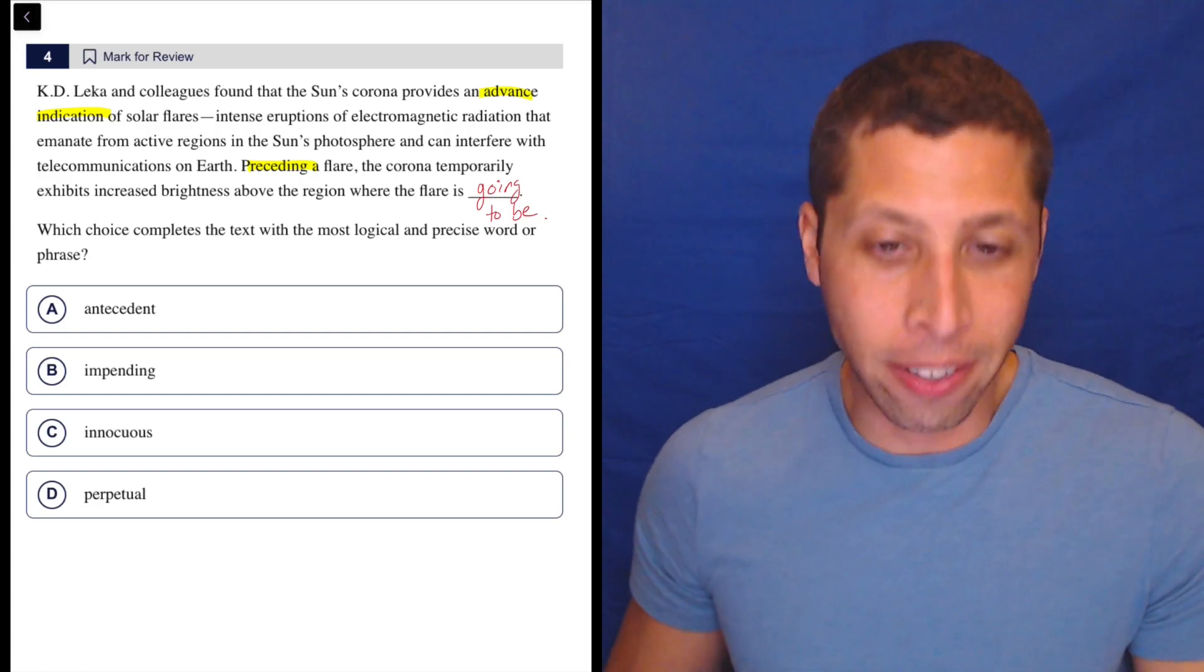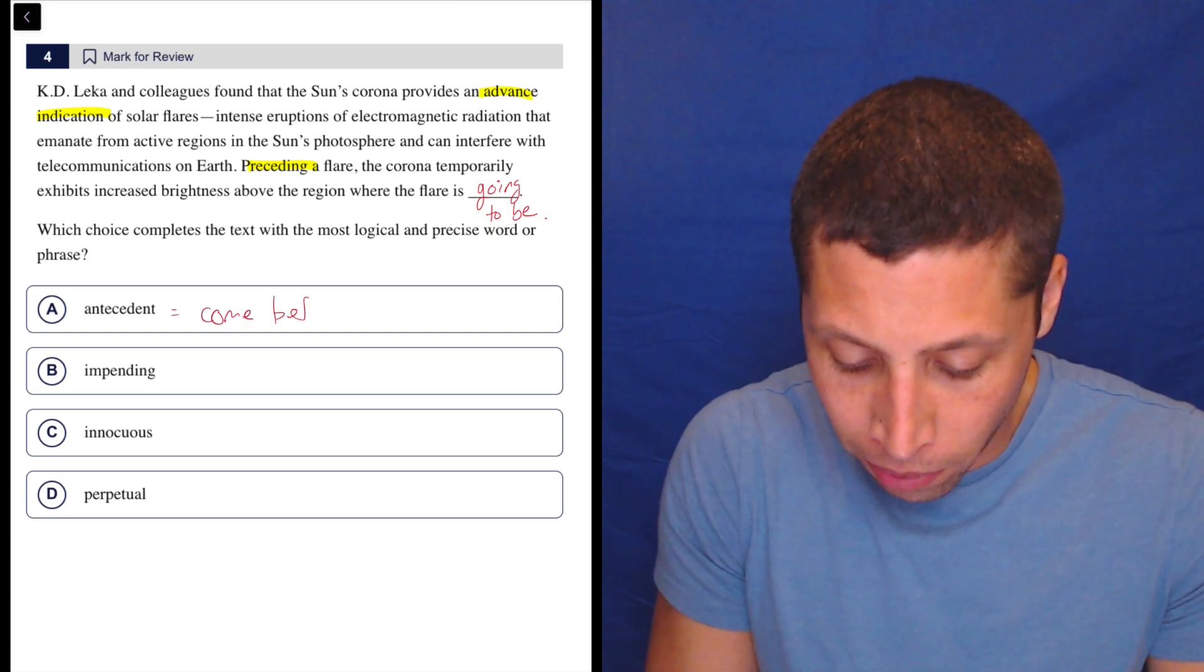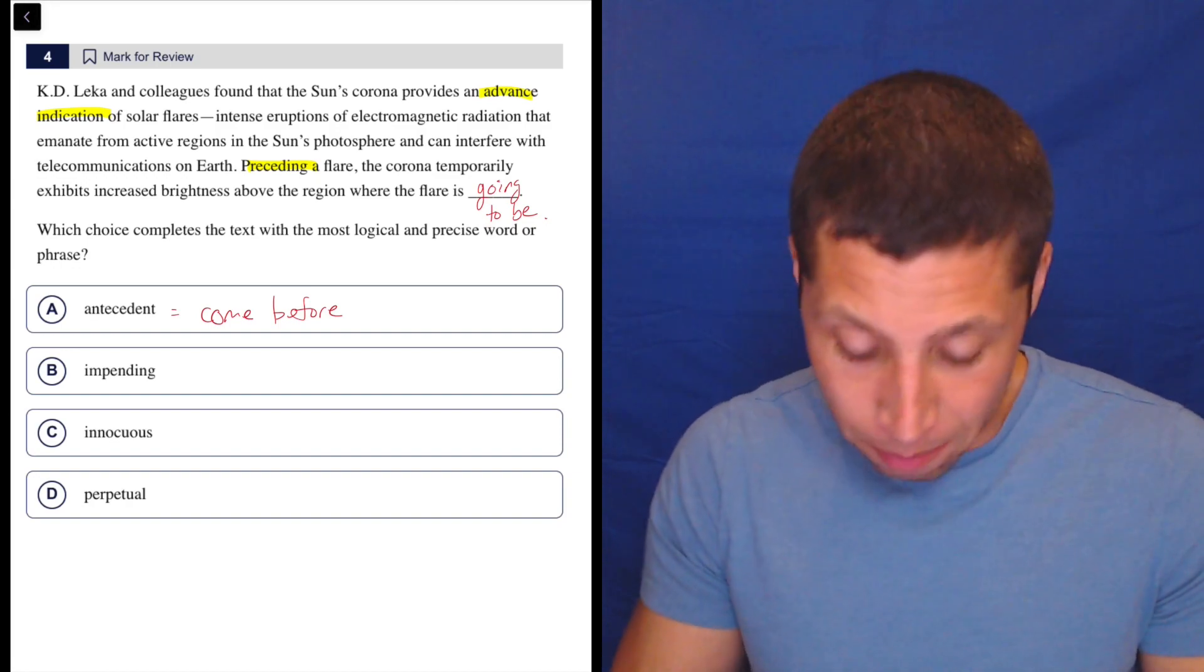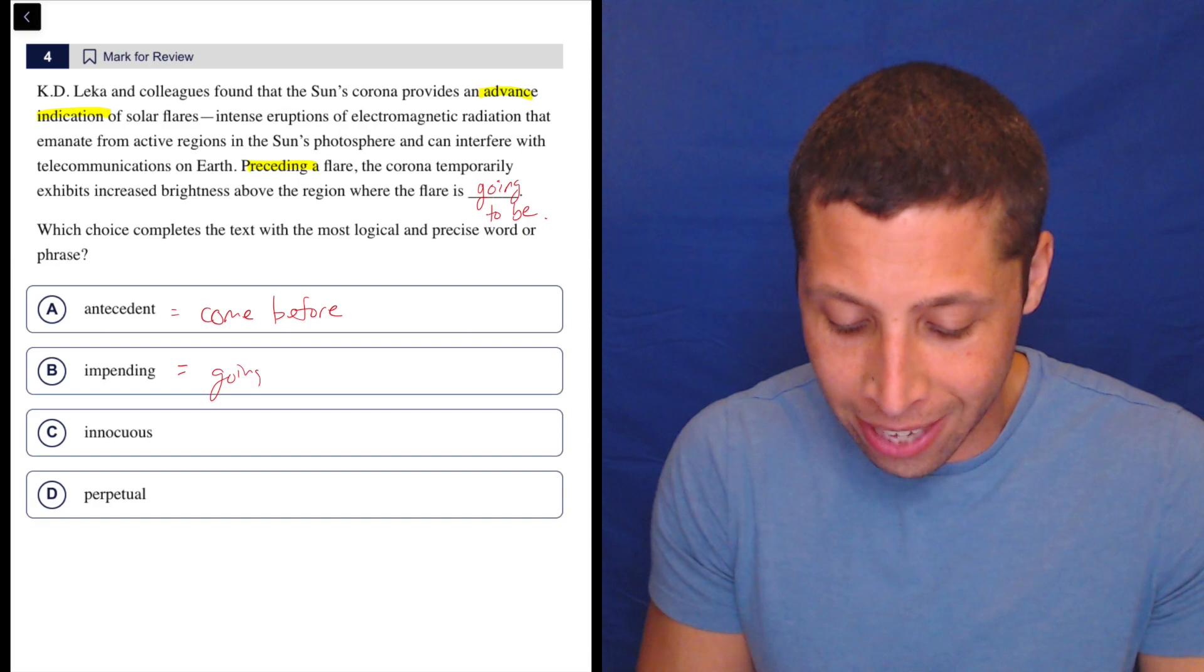Well, antecedent kind of means that. If something is antecedent, it means come before. So that seems to be related to time and order. So impending though also means like it's going to happen.